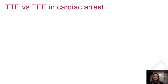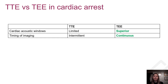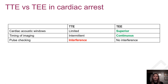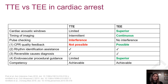TEE has many advantages compared to TTE. TEE offers superior cardiac acoustic windows, continuous imaging allowing more time for image acquisition, and no prolongation of pulse check pauses. It also offers chest compression quality feedback in real time and superior endovascular procedural guidance. Rhythm identification assistance and reversible causes diagnosis can also be achieved using TTE, and TTE should be used if it is the only available modality. We believe the most experienced physicians should perform the examination and that TEE should never be performed without proper training. Simulation-based learning is key, and even non-experienced ultrasonographers can achieve competency in basic TEE views.